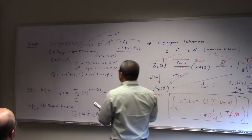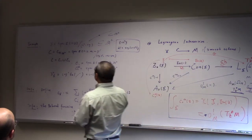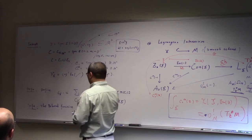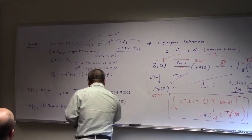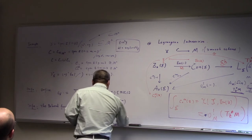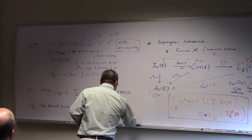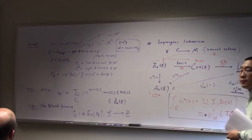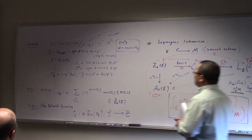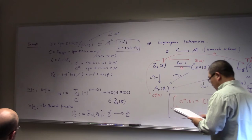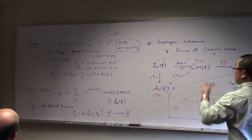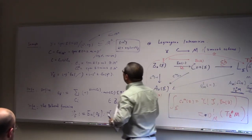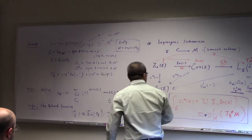And then in this case, of course, you will have the weighted Euler characteristic weighted by the Behrend function of this one. So the Behrend function is an integer-valued constructible function on X. So now, what do we do with this? So now we talk a little bit about Behrend and Thomas.